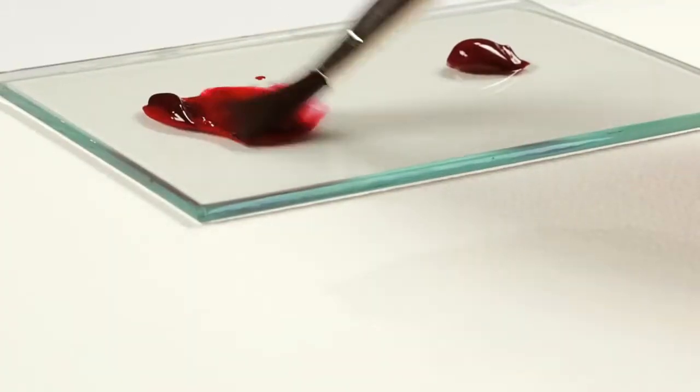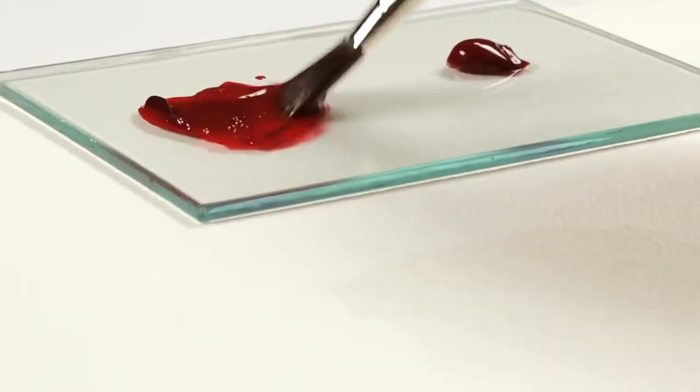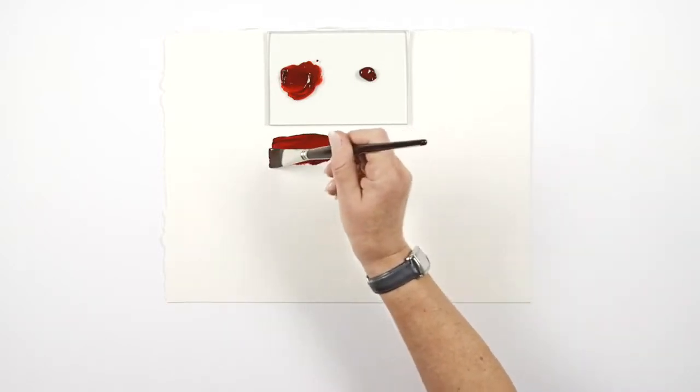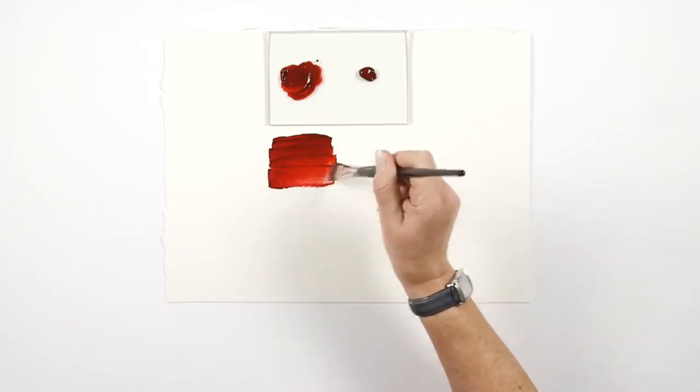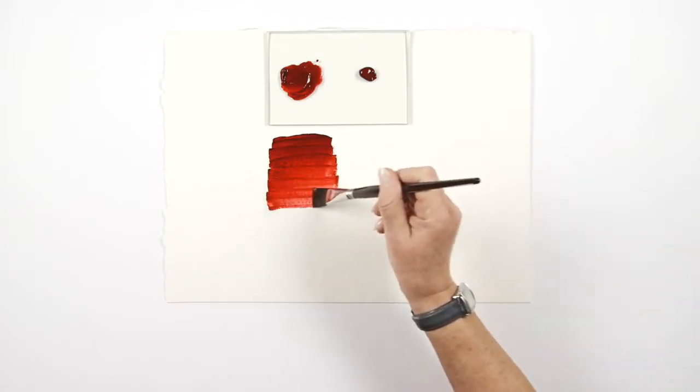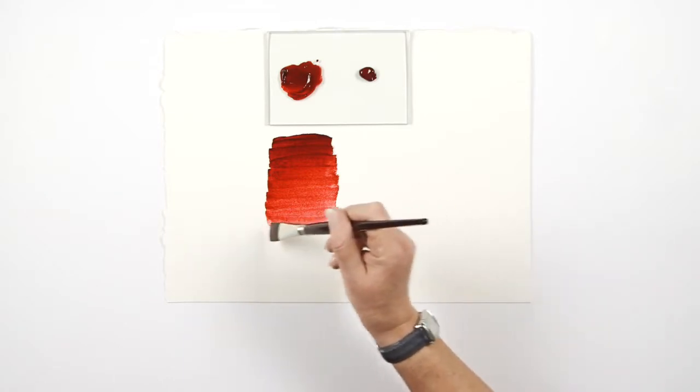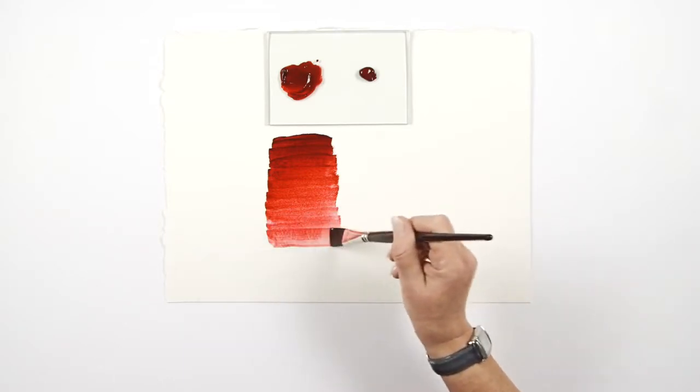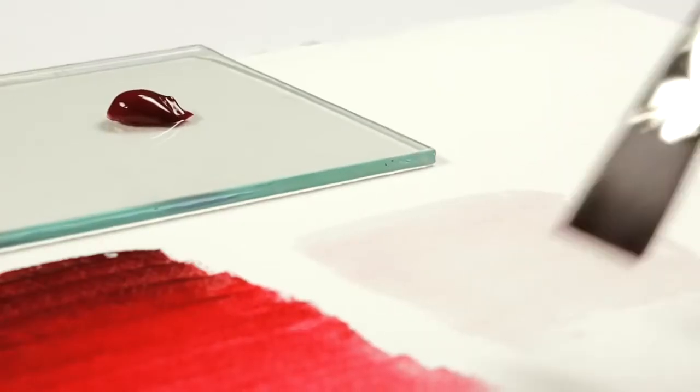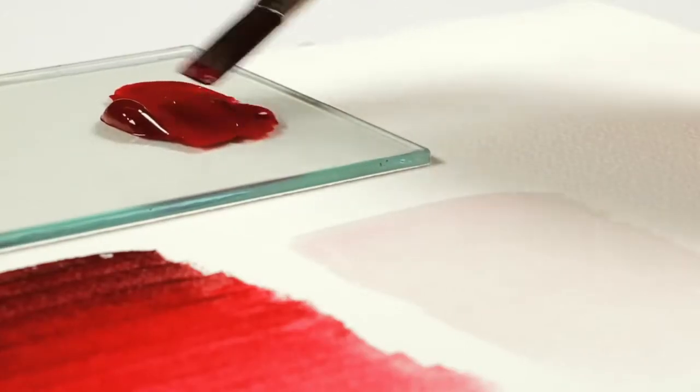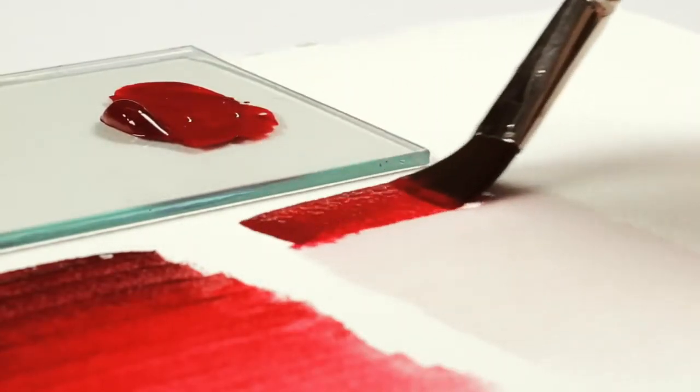As the name suggests these colors are both alizarin crimsons. This is the original alizarin crimson pigment and this is a synthetic version which is a blend of pigments to reproduce the alizarin crimson color.